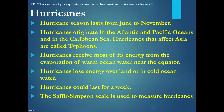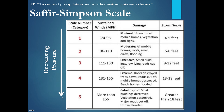Hurricanes can last for a week or so, and we use the Saffir-Simpson scale to measure them. Categories range from 1 through 5. Category 1 is 74 miles per hour, and category 5 is greater than 155 miles per hour, with damages ranging from minimal to catastrophic. Storm surge refers to how high the ocean or sea level rises compared to the norm. For a category 3, it would be 9 to 12 feet above normal sea level. Hurricane Katrina was a category 5 with greater than 18 feet above sea level.